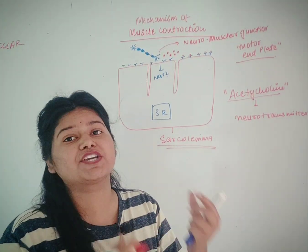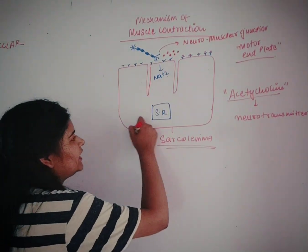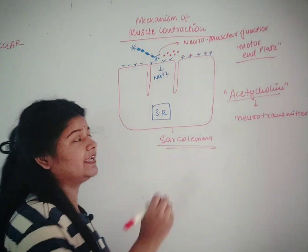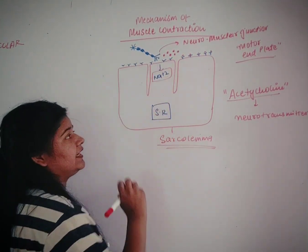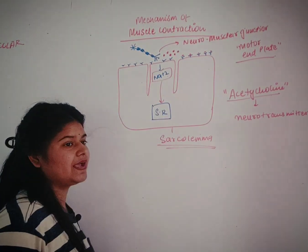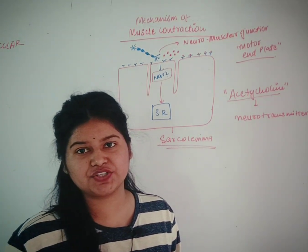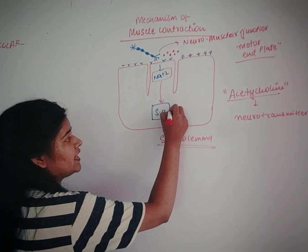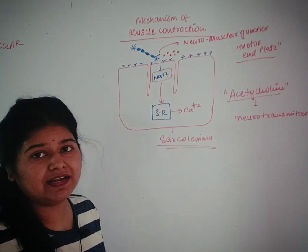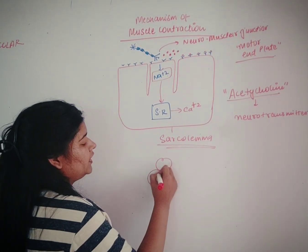An action potential is emitted on the sarcolemma and it becomes depolarized. Some sodium ions enter into the muscle, and these sodium ions act on the sarcoplasmic reticulum, which is also called the storehouse of calcium. As a result, some calcium ions are released from the sarcoplasmic reticulum.